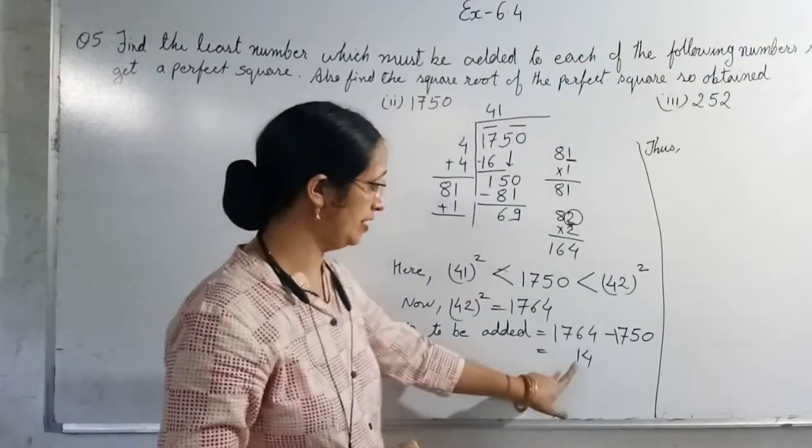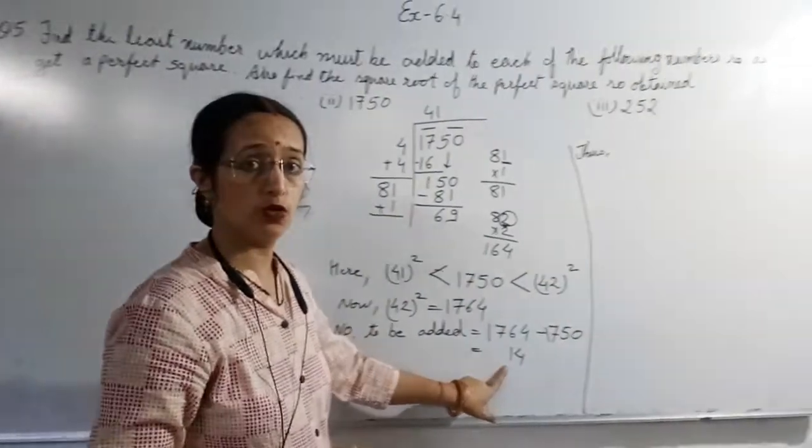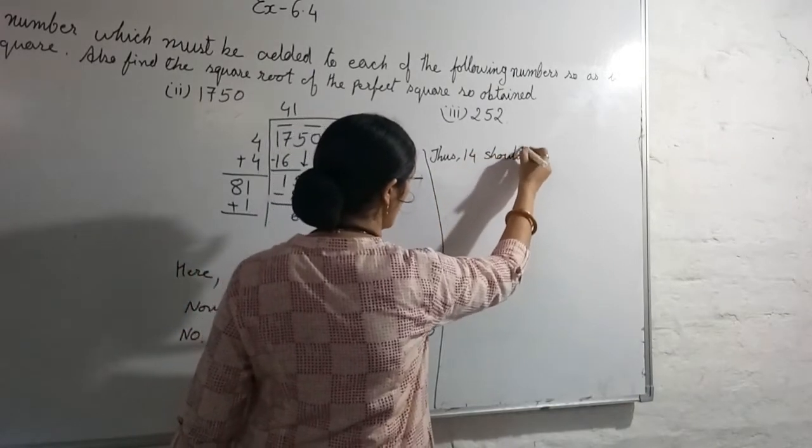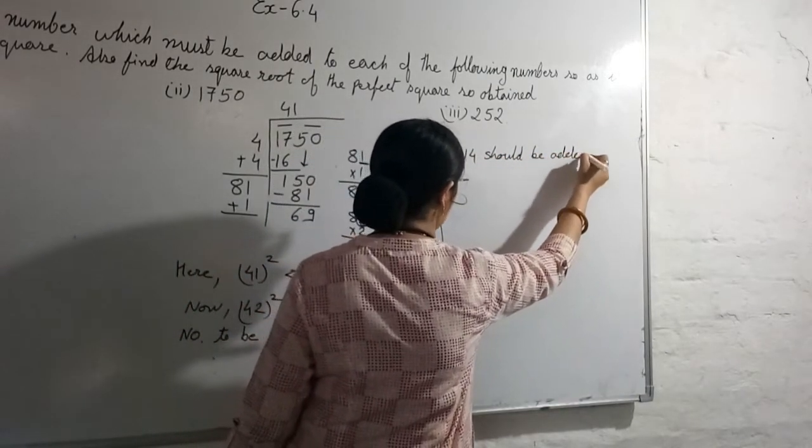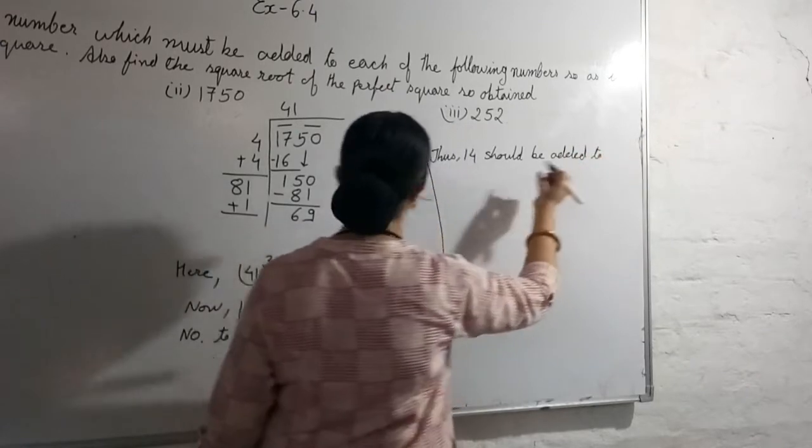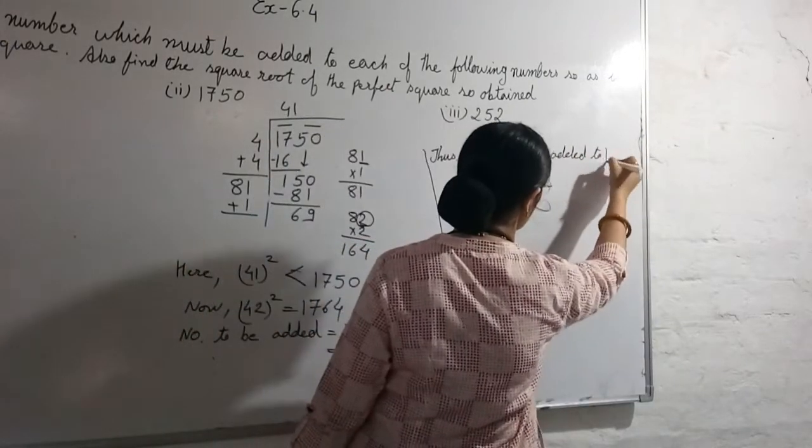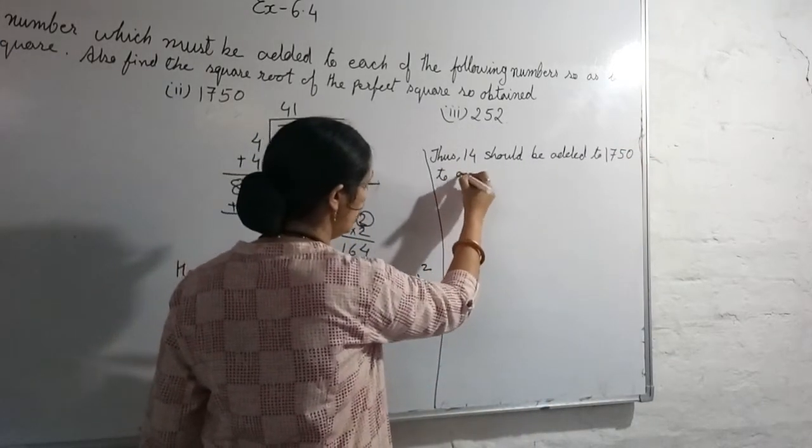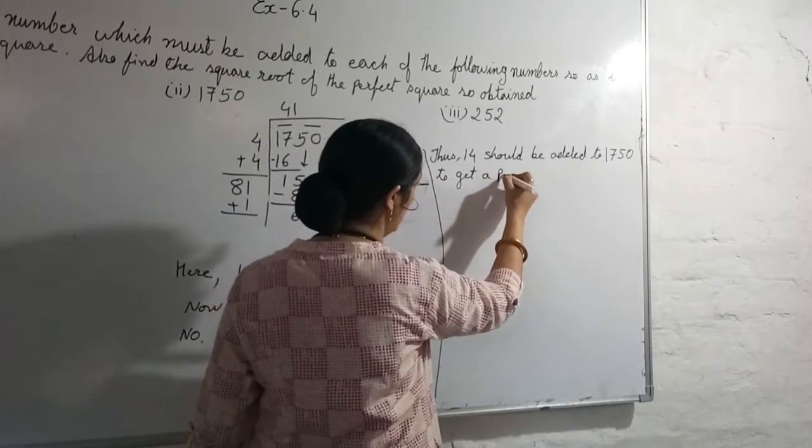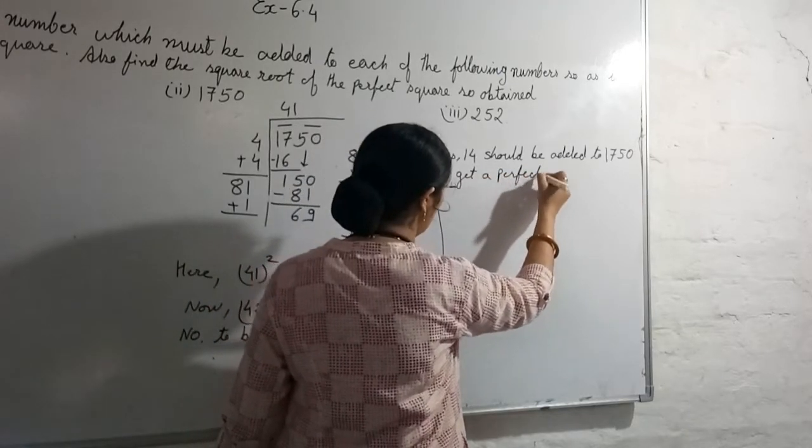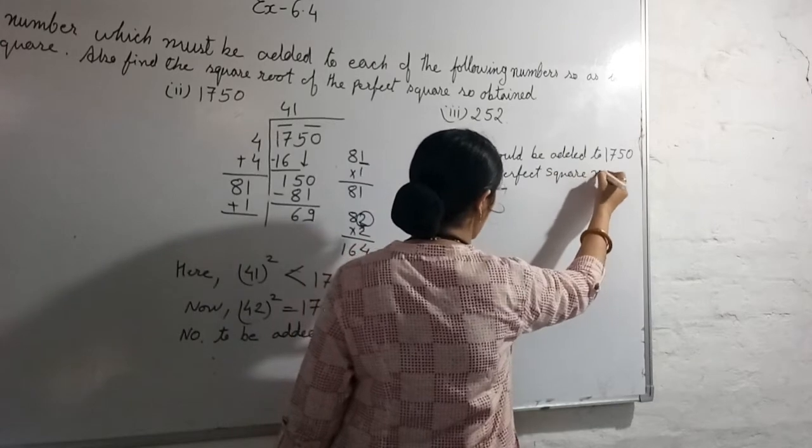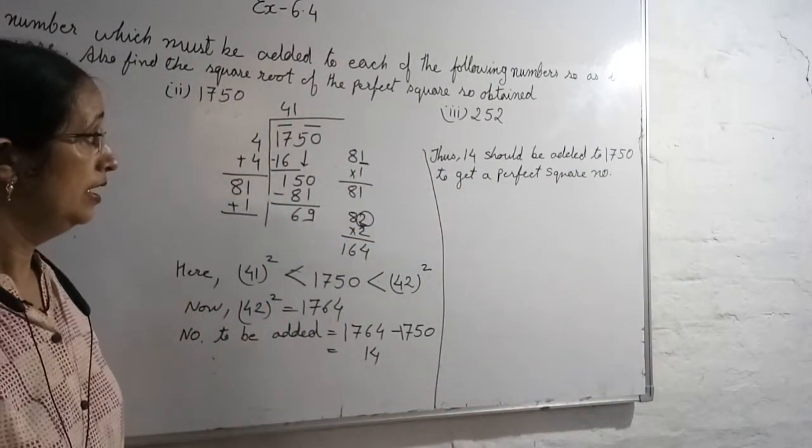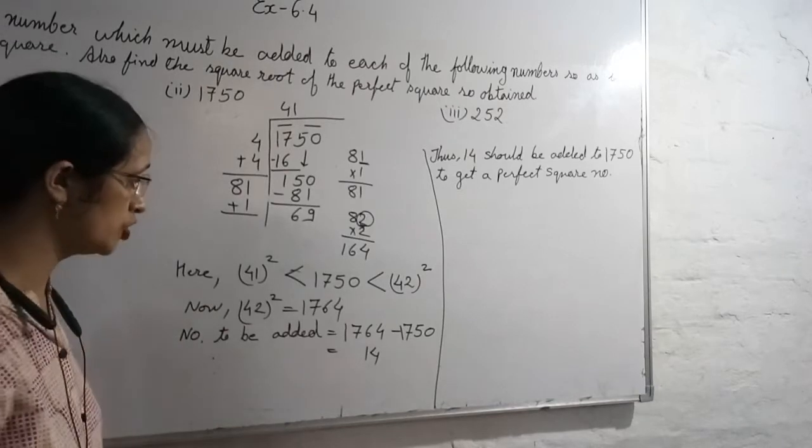14 should be added. Thus 14 should be added to 1750 to get a perfect square number.